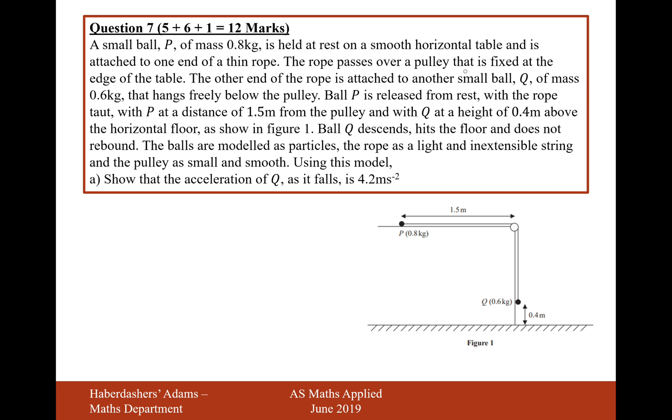The rope passes over a pulley that is fixed at the edge of the table. The other end of the rope is attached to another small ball Q of mass 0.6 kilograms that hangs freely below the pulley. Ball P is released from rest with the rope taut, with P a distance of 1.5 metres from the pulley, and with Q at a height of 0.4 metres above the horizontal floor.